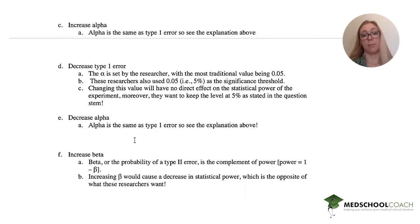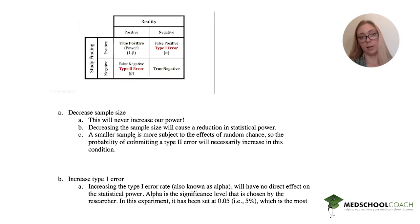Now increasing beta, and beta is the probability of a type 2 error. So if we increase beta, what's happening with our power?